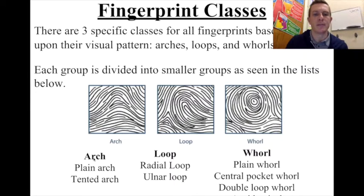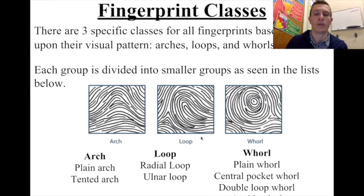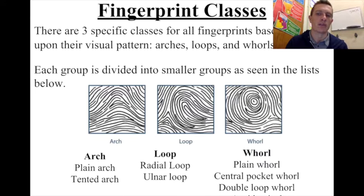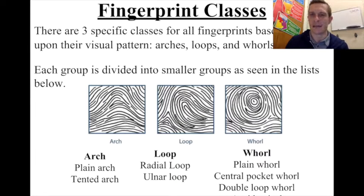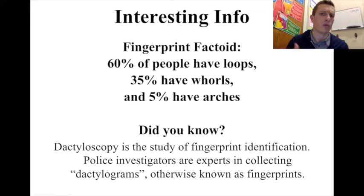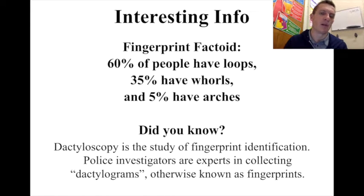Here's a typical arch pattern and there are two types of arches: plain arches and tented arches. This is a loop pattern and we're going to look very closely at how to determine whether it's a radial loop or an ulnar loop. And this is a whorl pattern, a circular pattern. There are a couple of different types — plain whorl and central pocket whorl — and occasionally we'll see a double whorl or an accidental whorl. 60% of the people on the planet have loops, 35% have whorls, and 5% have arches.